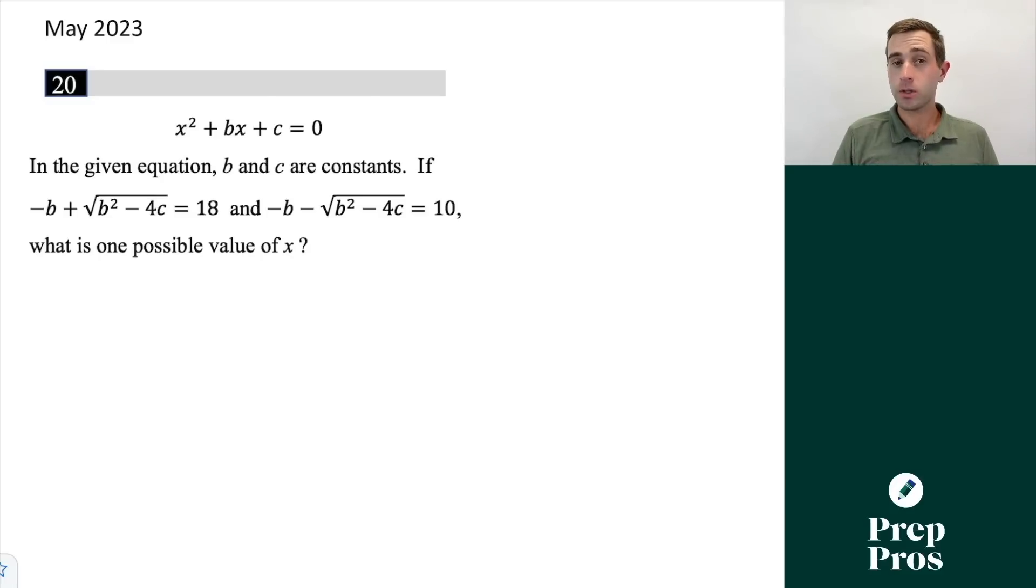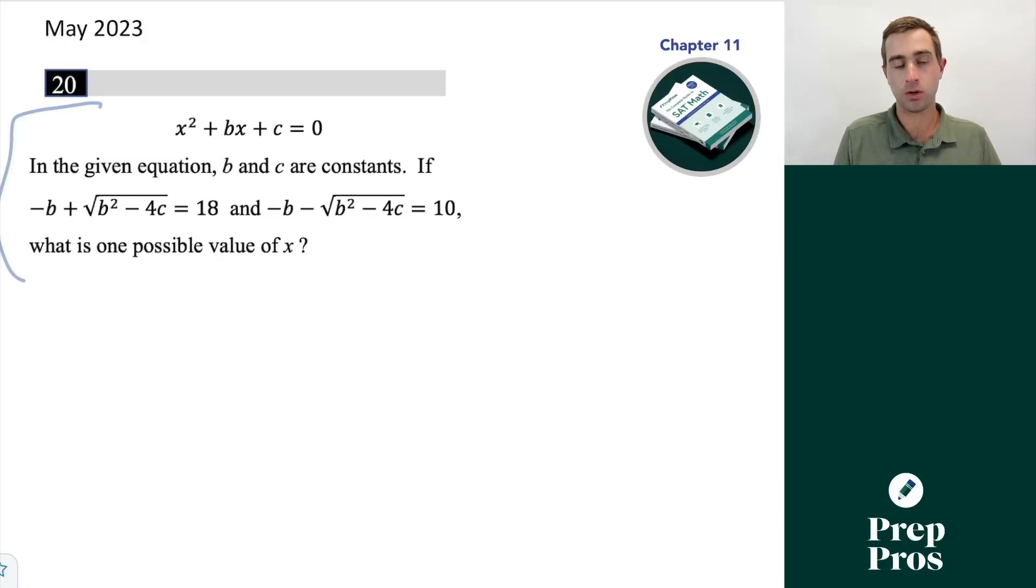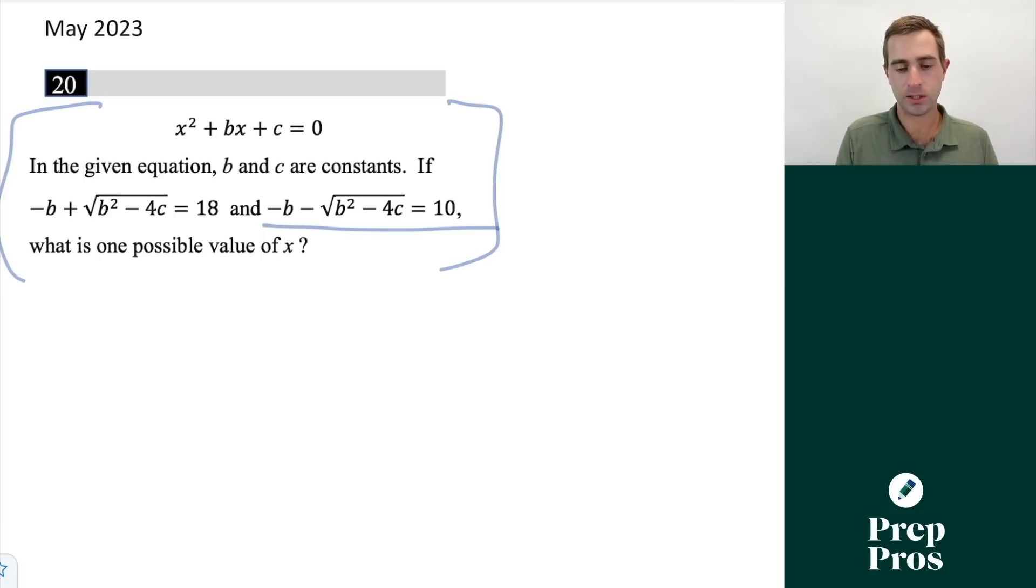Now we're going to start with this quadratics question from the May test. I strongly recommend pausing the video as we go through each of these questions and trying them out on your own. This is a question that we've seen very similar variations, according to my students, on the June test as well as some of the digital tests here. We're told in the given equation, b and c are constants. If -b + √(b² - 4c) = 18 and we are given that statement as well, what is one possible value of x? Anytime you get these kind of strange SAT questions, always try to relate back what concept we're dealing with. This is going to be the quadratic formula.